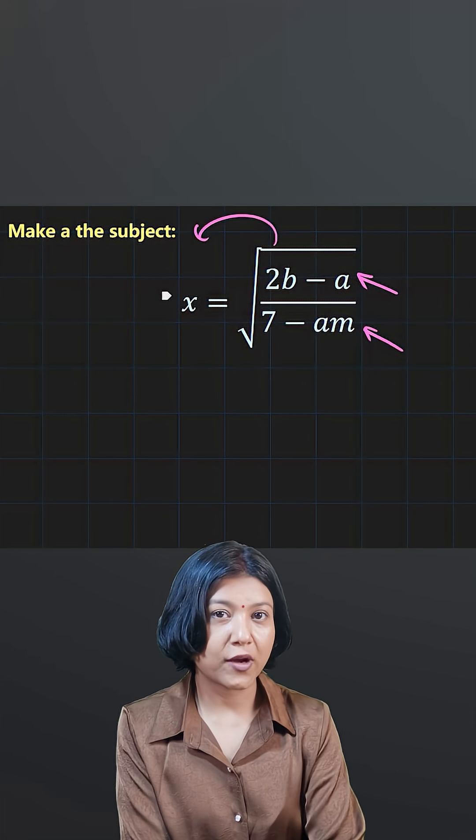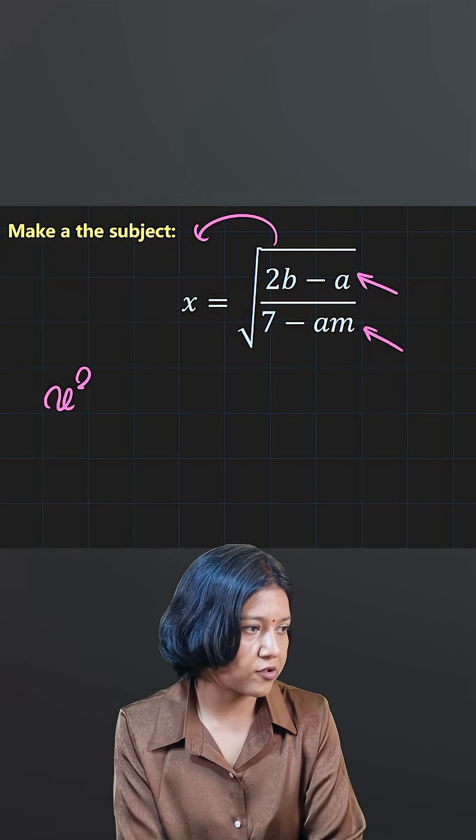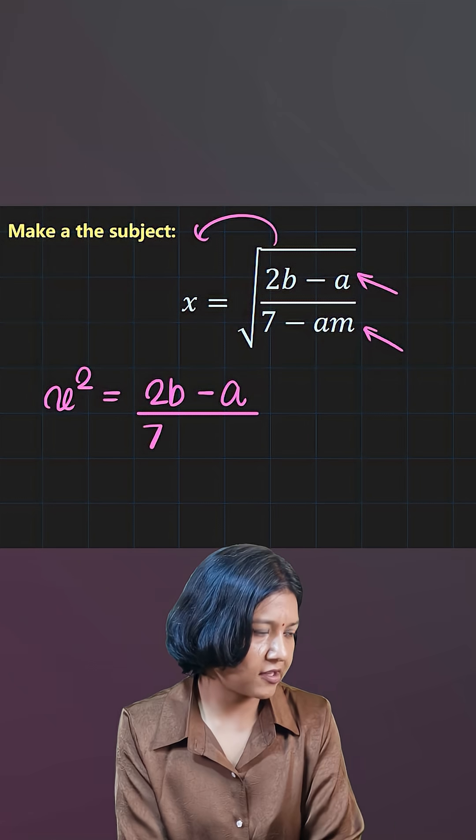You want to get rid of this root. The square root goes to the other side to become square. So we will have x squared equals 2b minus a upon 7 minus am. You see a fraction on one side.